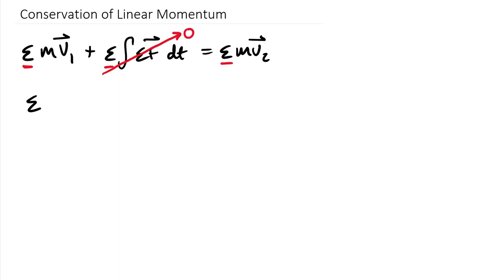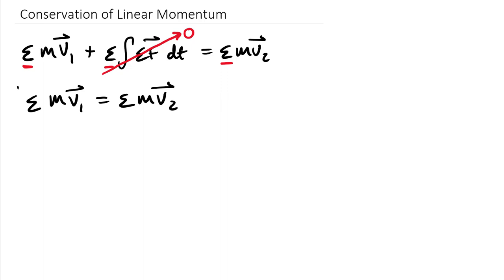If we have no impulse, the center term goes to zero, and we end up with: sum of mv₁ equals sum of mv₂. This is true for both one-dimensional and two-dimensional cases, and it is fundamentally our conservation of linear momentum equation.